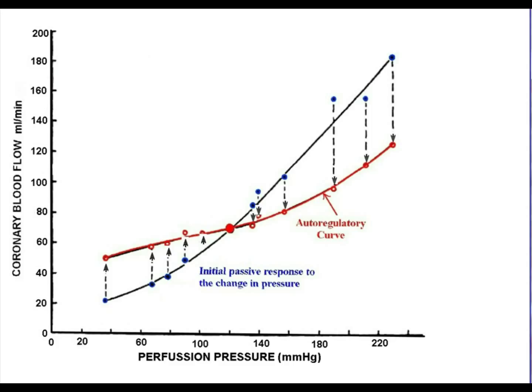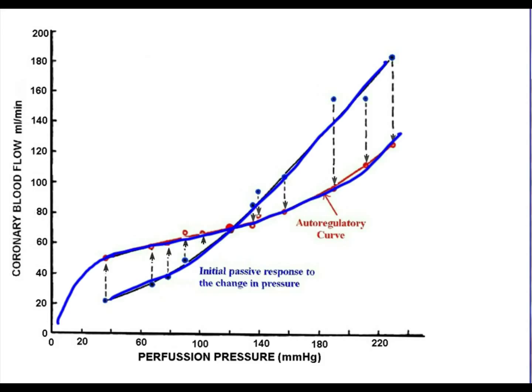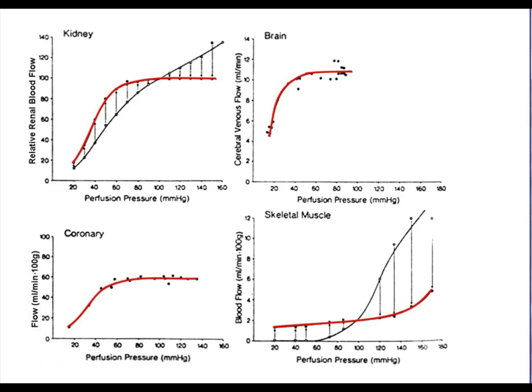We can do this kind of study for a number of different tissues. This shows the passive curve and the active autoregulatory curve for the coronary vasculature. How flat the curve is and how much autoregulation takes place is totally dependent upon the tissue. The kidney controls its flow very well over a rather extensive range of pressures. The brain autoregulates very well. The coronary has a very nice flat autoregulatory curve. The skeletal muscle is not quite as effective.